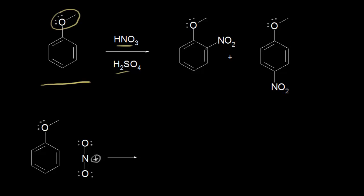One observed product is to put the nitro group on the carbon right next to the carbon that has the methoxy substituent — we say these two groups are ortho to each other, so this is the ortho product. I can label this carbon as being the ortho position on my benzene ring. The other product observed is the nitro group installed on the opposite side from the methoxy substituent — we call this the para product, and I'll label the para position on our benzene ring.